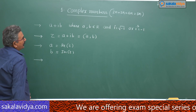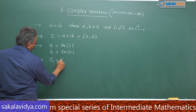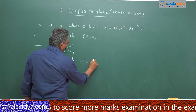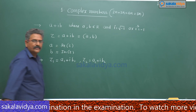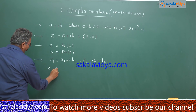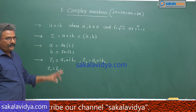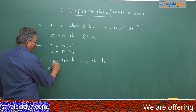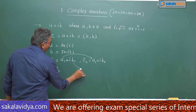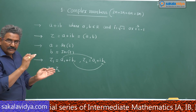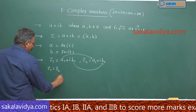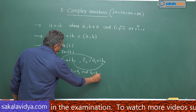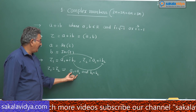Suppose we take two complex numbers: z1 = a1 + ib1 and z2 = a2 + ib2. If z1 equals z2, what happens? This is the equality of complex numbers. When two complex numbers are equal, the real parts are equated and the imaginary parts are equated. So we get a1 = a2 and b1 = b2.